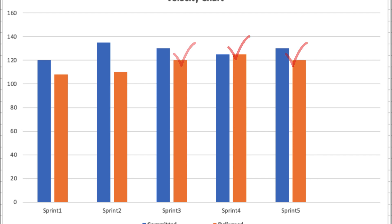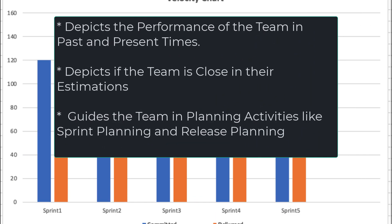Velocity charts are very effective as they depict how the team is performing now and has been performing in the past. They are helpful in observing if the team is estimating correctly and making close assumptions over time — because the assumptions made and the risk assessment capability determine if estimates are correct. Velocity charts also play a vital role in planning. During sprint planning, the team is aware of their velocity — what they can deliver in a sprint — and understands how much work they can pull. Mature teams never pull stories with story points significantly higher than what they have been delivering in the past.